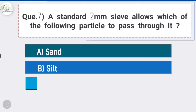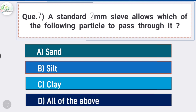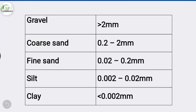Question number seven: a standard 2 mm sieve allows which of the following particles to pass through it? Answer is option D, all of the above — sand, silt, and clay. According to ISSS classification: gravel is greater than 2 mm, coarse sand is 0.2–2 mm, fine sand is 0.02–0.2 mm, silt is 0.002–0.02 mm, and clay is less than 0.002 mm.